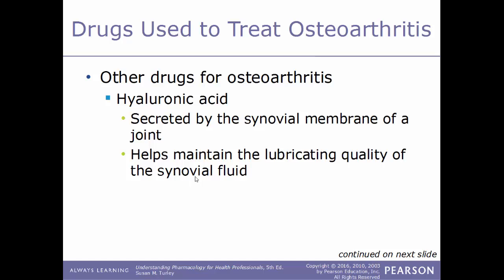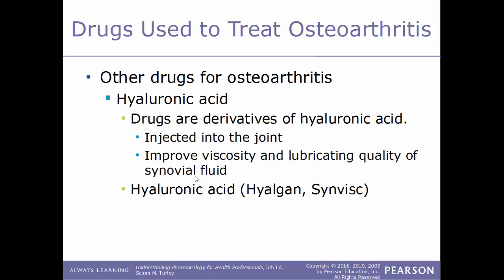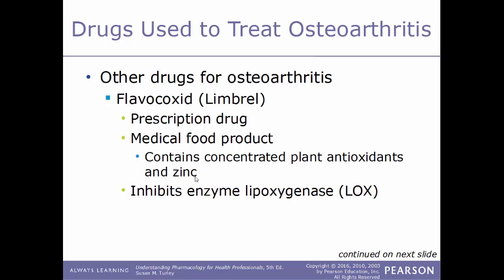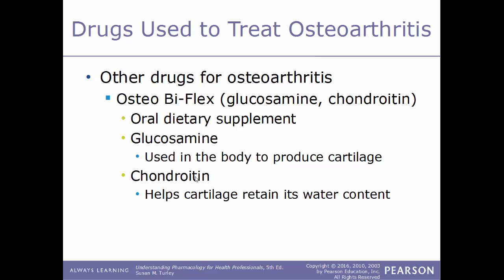Another type of drug used to treat osteoarthritis is hyaluronic acid, secreted by the synovial membrane of a joint to maintain the lubricating quality of synovial fluid. Derivatives of hyaluronic acid are injected directly into the affected joint to improve its viscosity and lubricating quality — brand names include Hyaluronic Acid or Synvisc. Another drug is flavocoxid, better known as Limbrel — a prescription medical food product containing concentrated plant antioxidants and zinc that works by inhibiting the enzyme lipoxygenase (LOX). Osteo Bi-Flex is an oral dietary supplement combining glucosamine, which helps produce cartilage, and chondroitin, which helps cartilage retain water content.